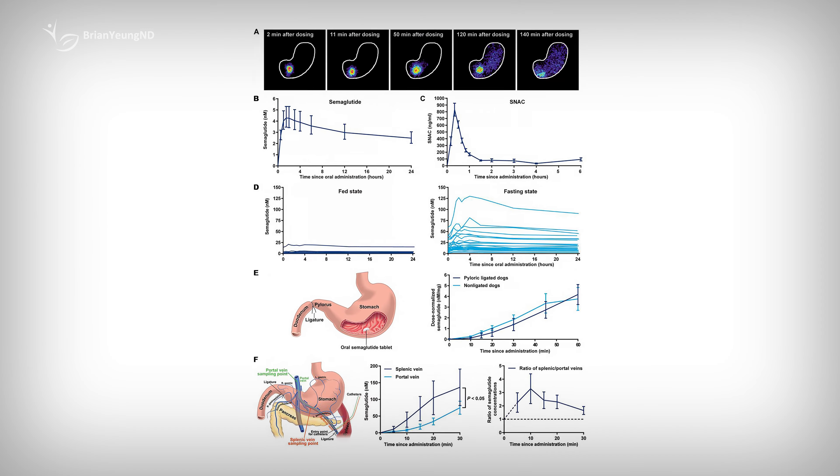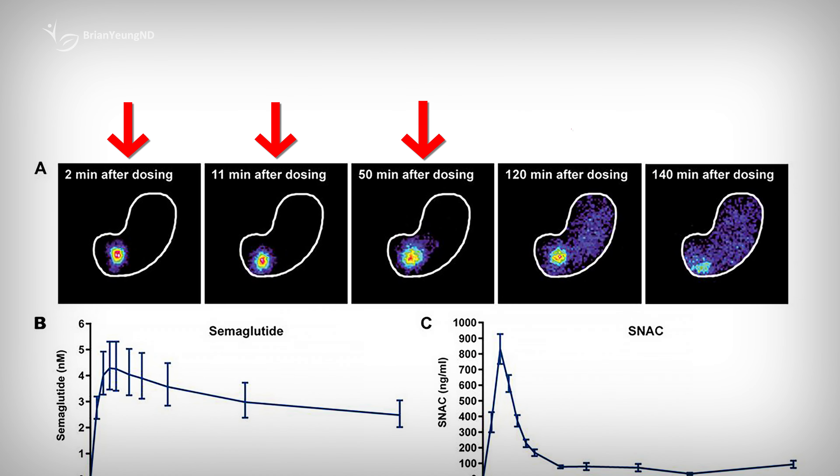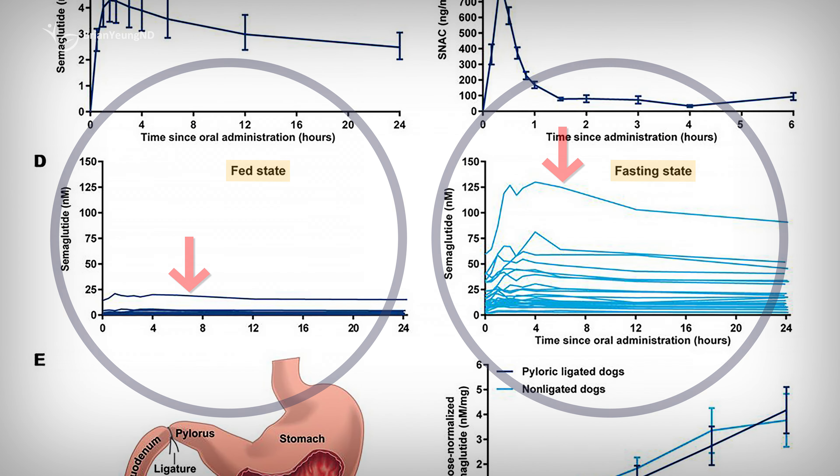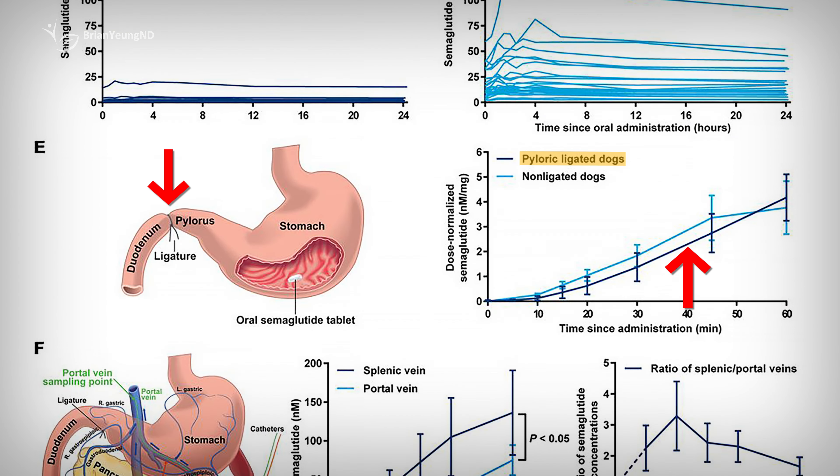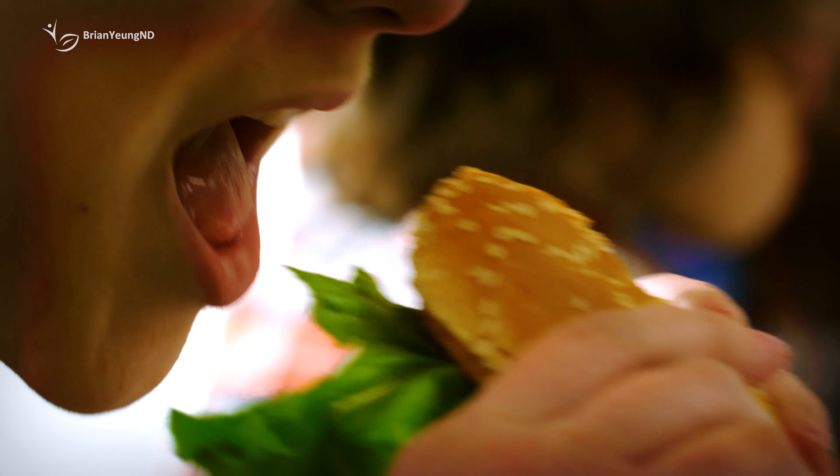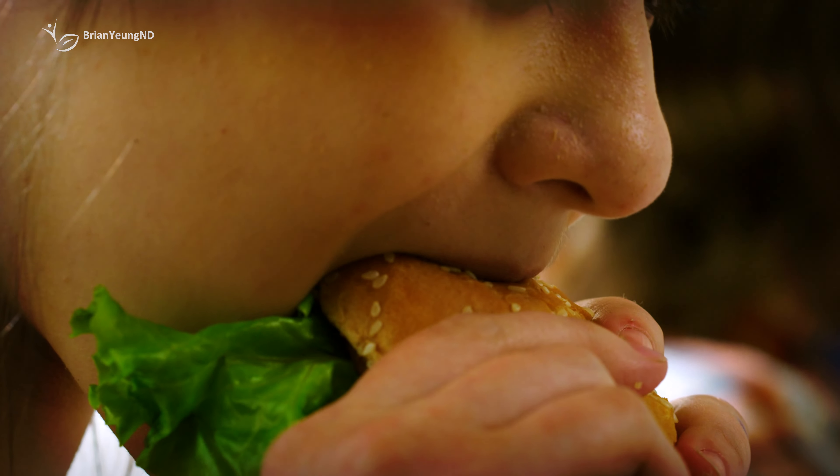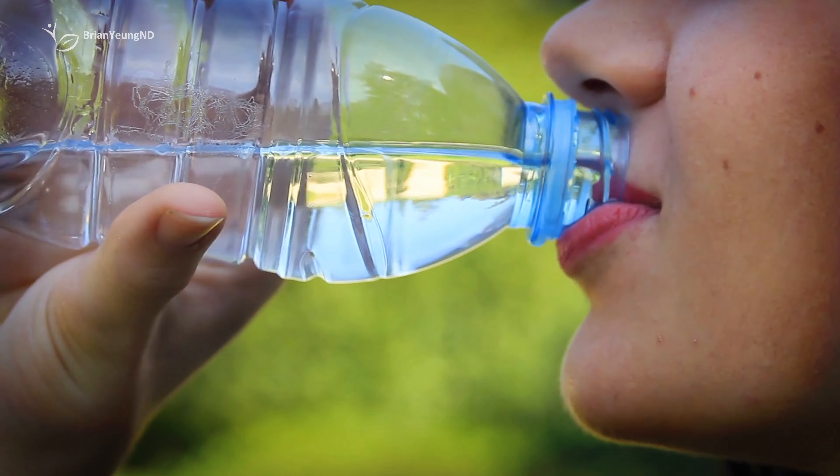Now let's get into why this happens. Unlike food or typical medications, oral semaglutide is primarily absorbed in the stomach, not the intestines. Studies involving dogs provide insight into this process. They compared semaglutide levels in dogs with their stomachs blocked off from their intestines to those with normal stomachs and found similar absorption patterns. This shows that semaglutide does not need to enter the intestines and is absorbed through the stomach. And this absorption can be easily disrupted by food or any other substances in the stomach.